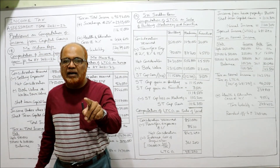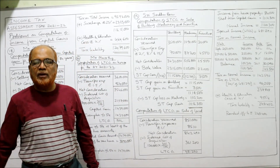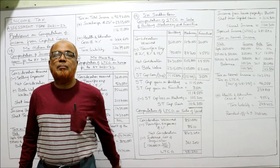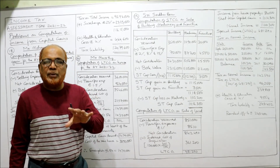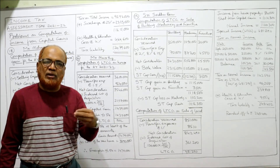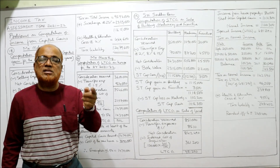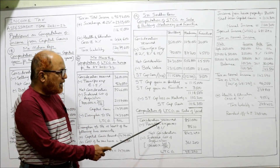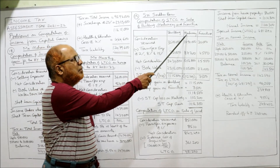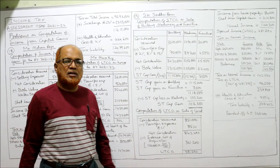In this problem, you learned: we have both short-term and long-term capital gain. It is not specified in the problem — you have to remember the provisions. A depreciable asset always gives short-term capital gain, whatever the period of holding. A non-depreciable asset gives long-term capital gain. Land is non-depreciable, whereas machinery, building, and furniture are depreciable.